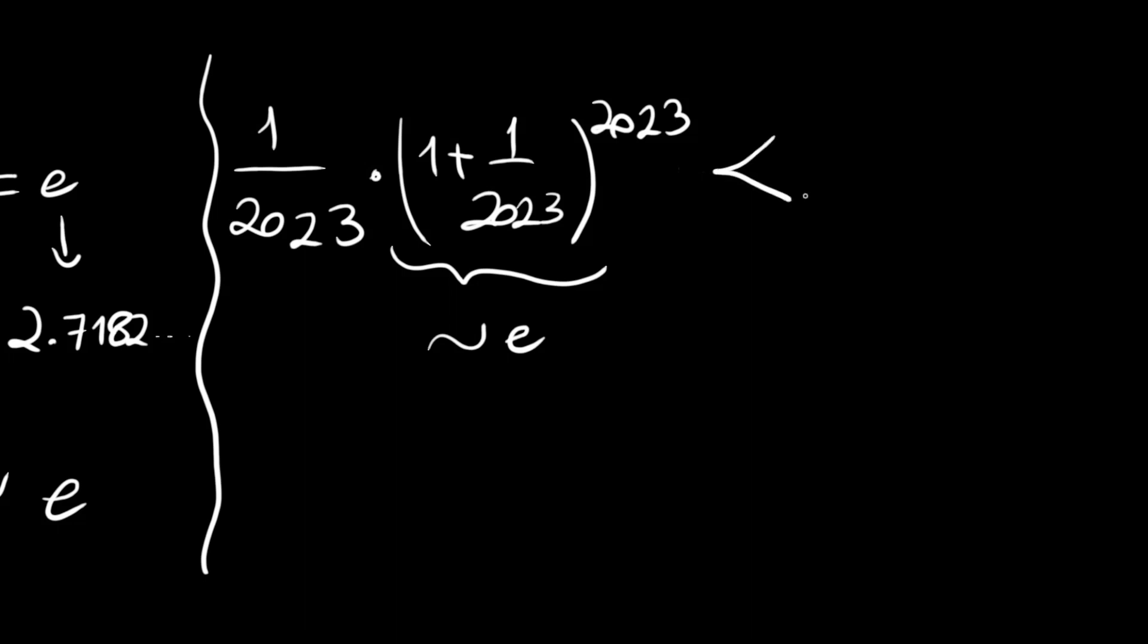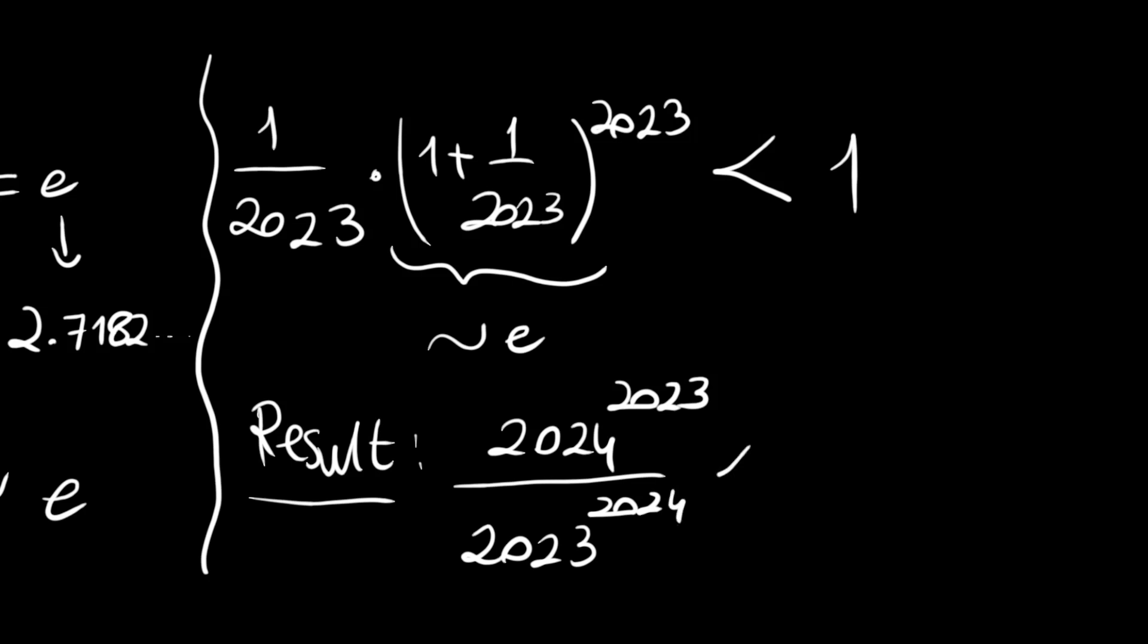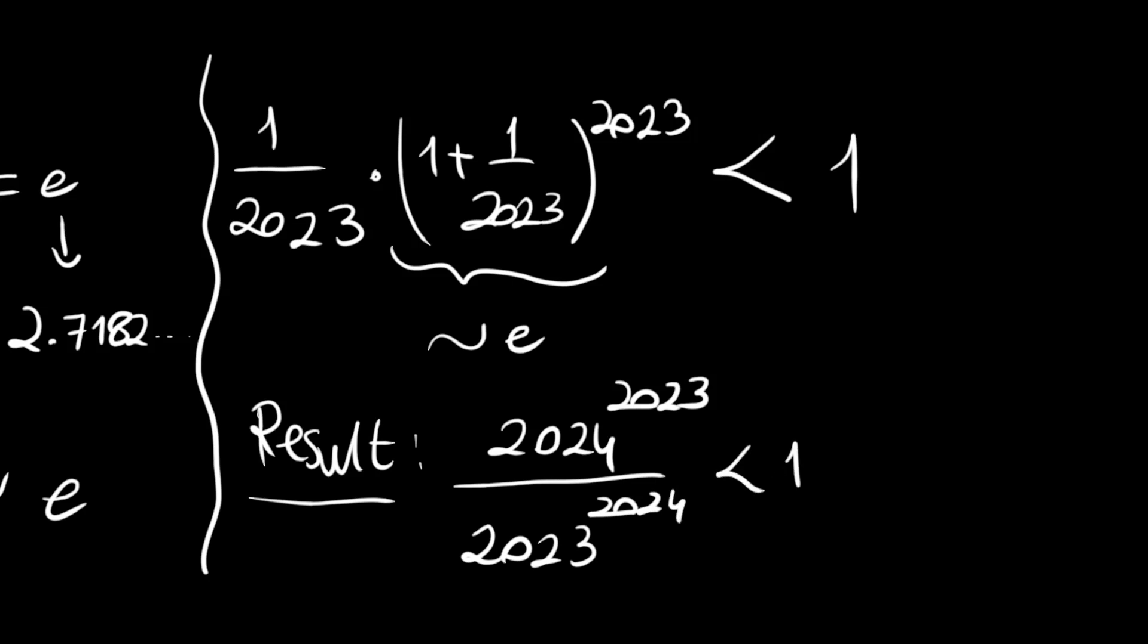less than 1, since 1 over 2023 times e is less than 1. So the result is: 2024 to the 2023 divided by 2023 to the 2024 is less than 1.